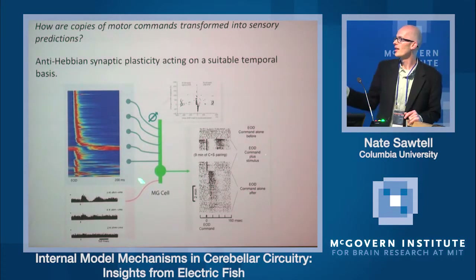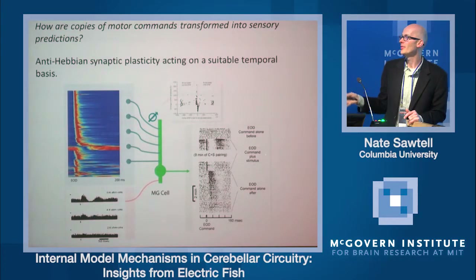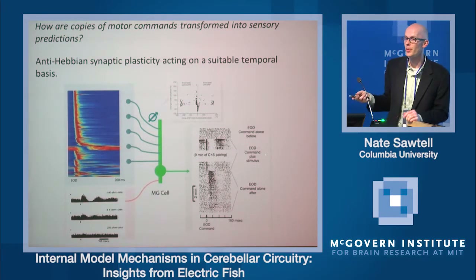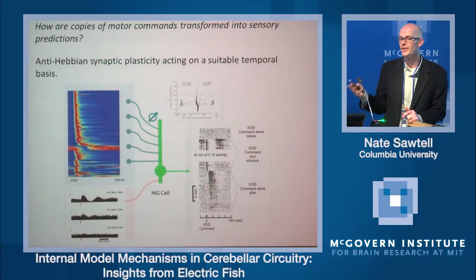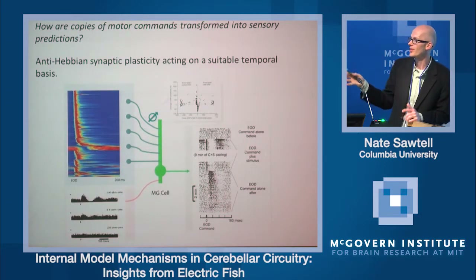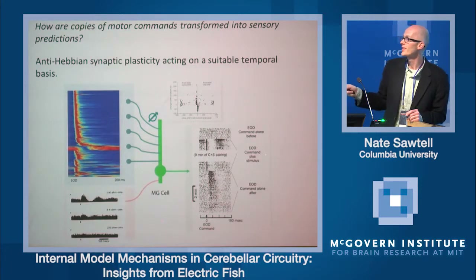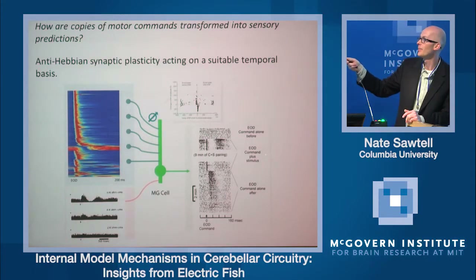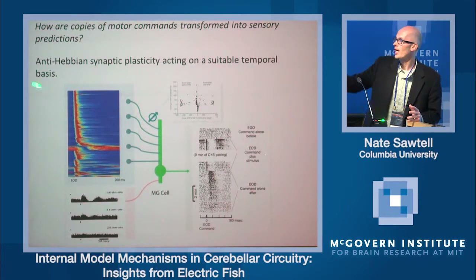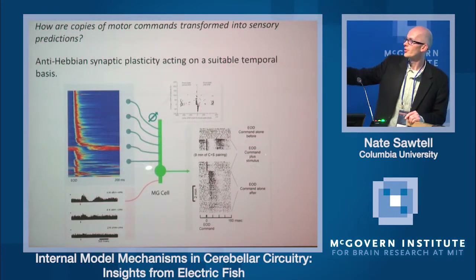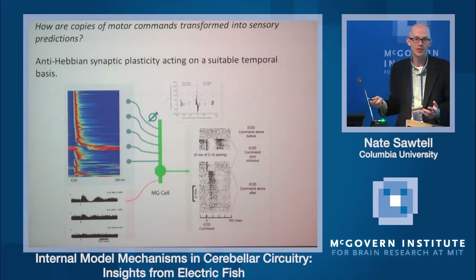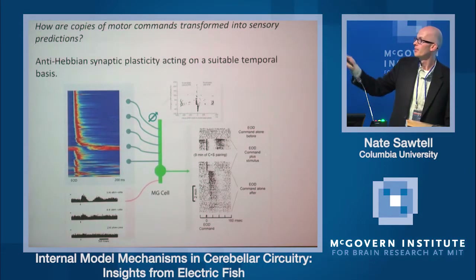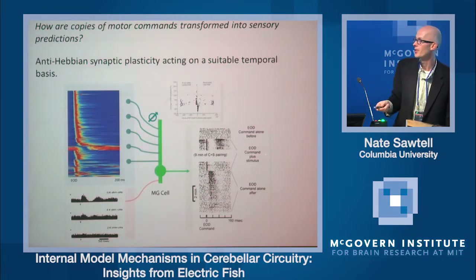To summarize: the animal can predict the sensory consequences of motor commands, subtract them out, and become more sensitive to the world — solving this problem of reafference. He solves the problem of translating a literal copy of a motor command into a language that can predict sensory consequences, all through fairly simple mechanisms: an anti-Hebbian synaptic plasticity rule acting on suitable corollary discharge representations transformed through the circuitry of the granular layer. Some of these basic ingredients are very similar to models of the cerebellum.